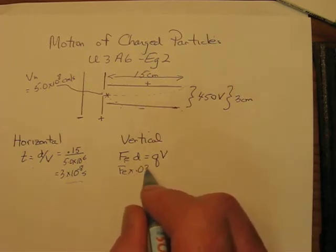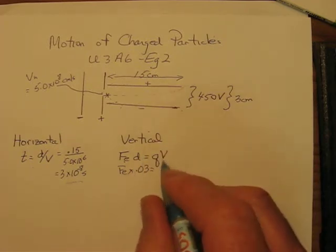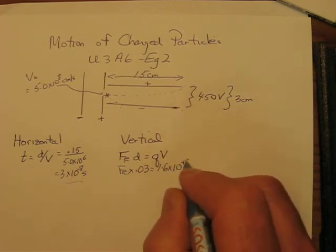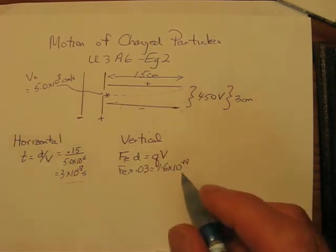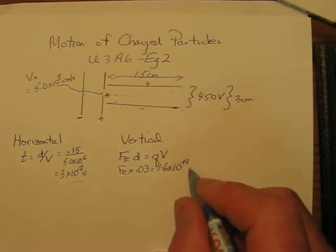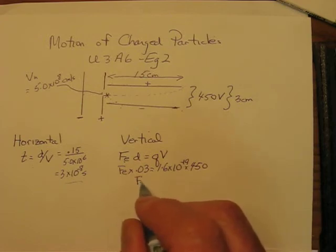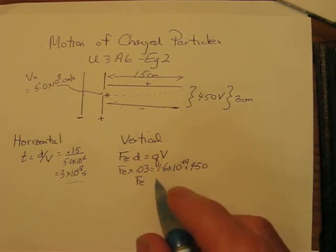So we'd put a 0.03 in here times the charge on an electron. You never have to memorize the charge on an electron. That's always given to you if you need it. Times the voltage, which is 450.